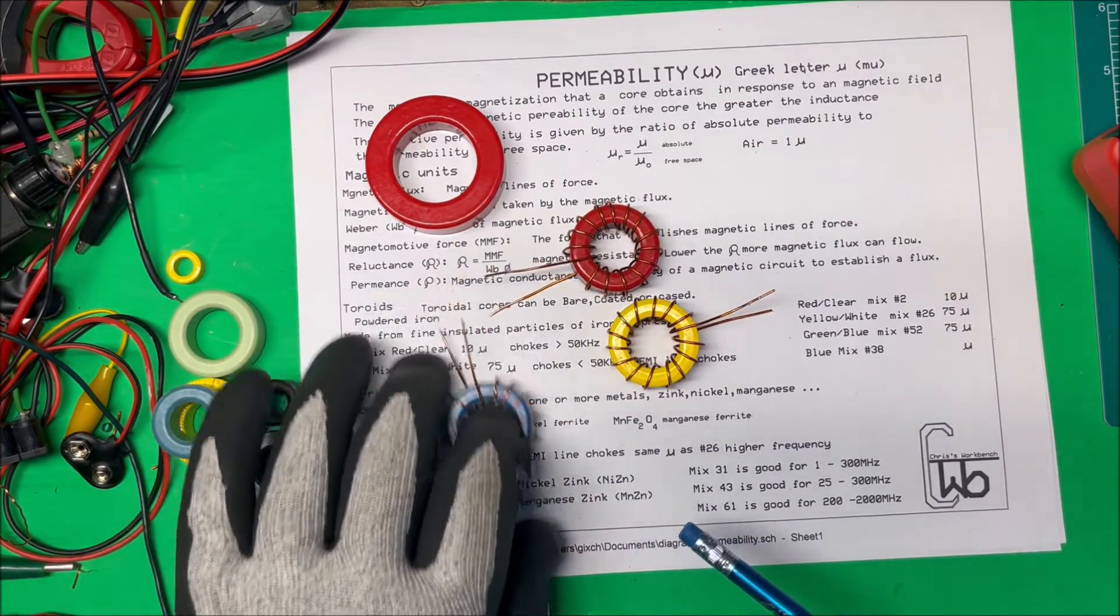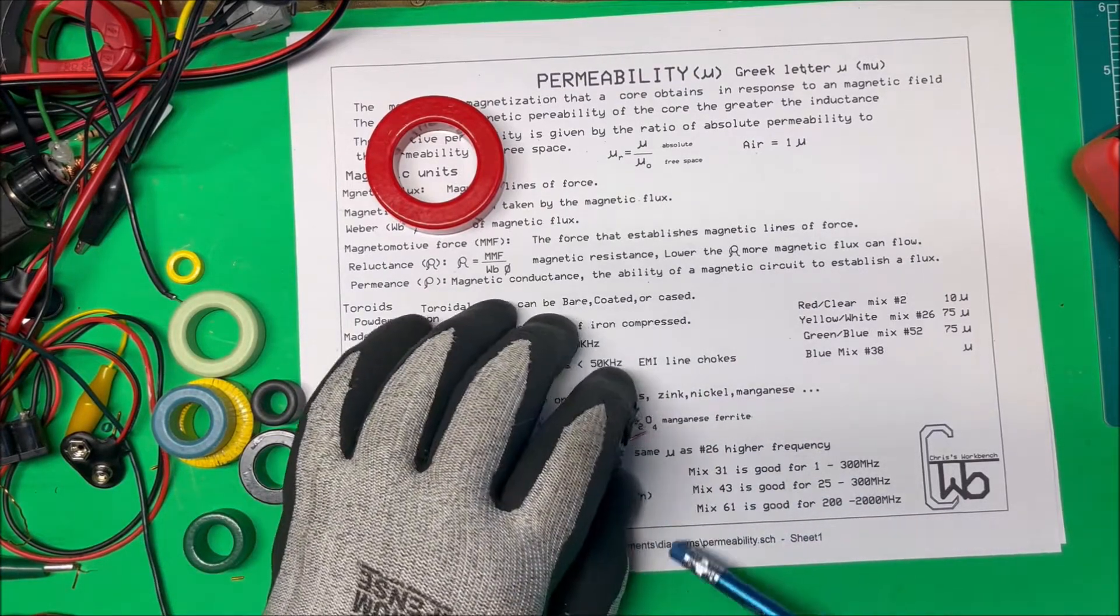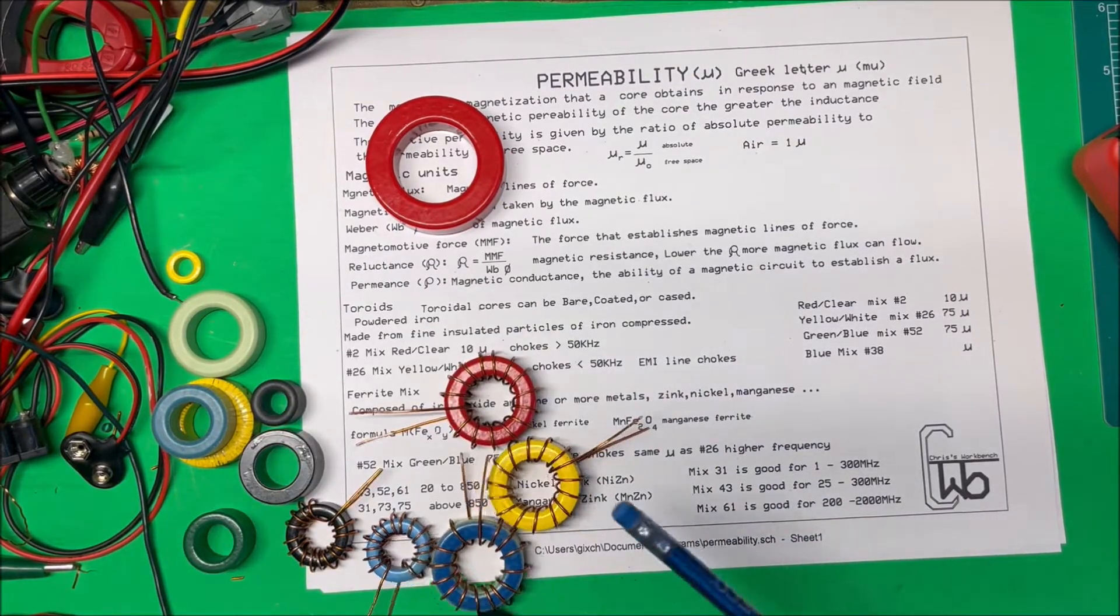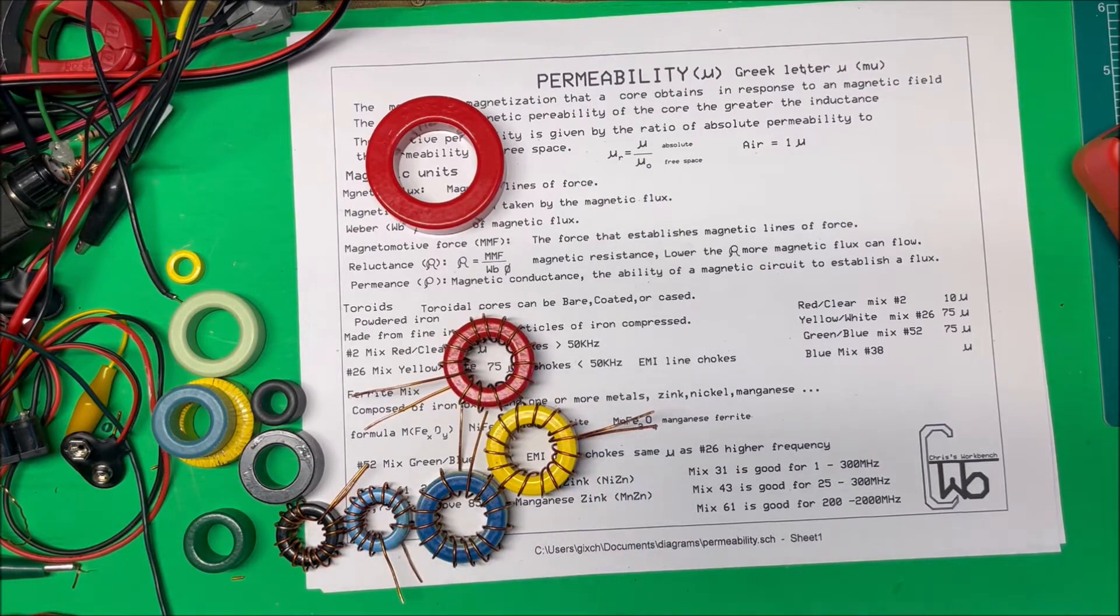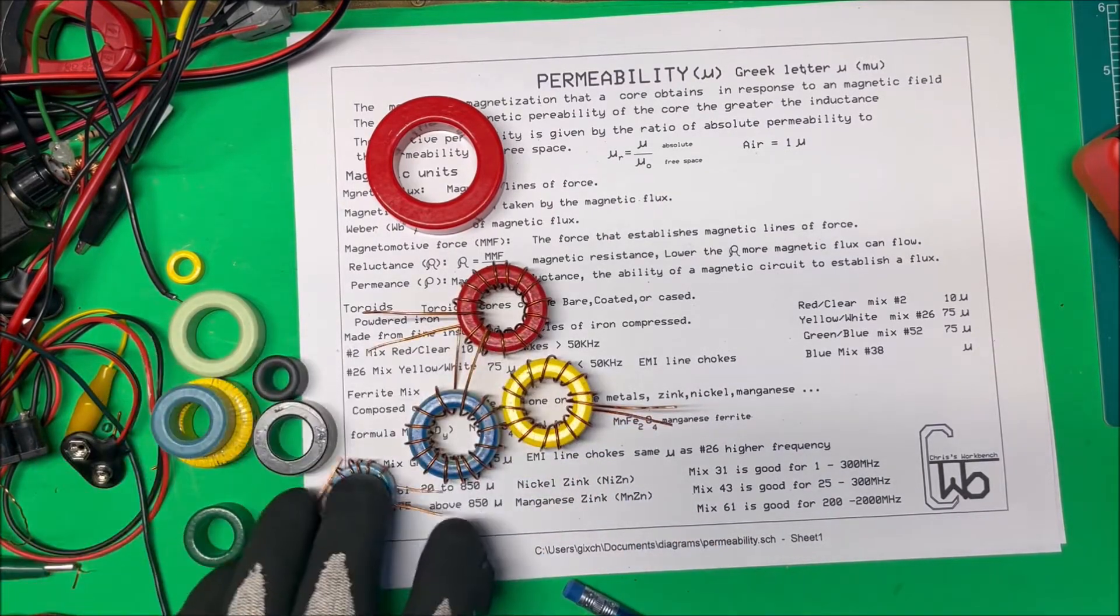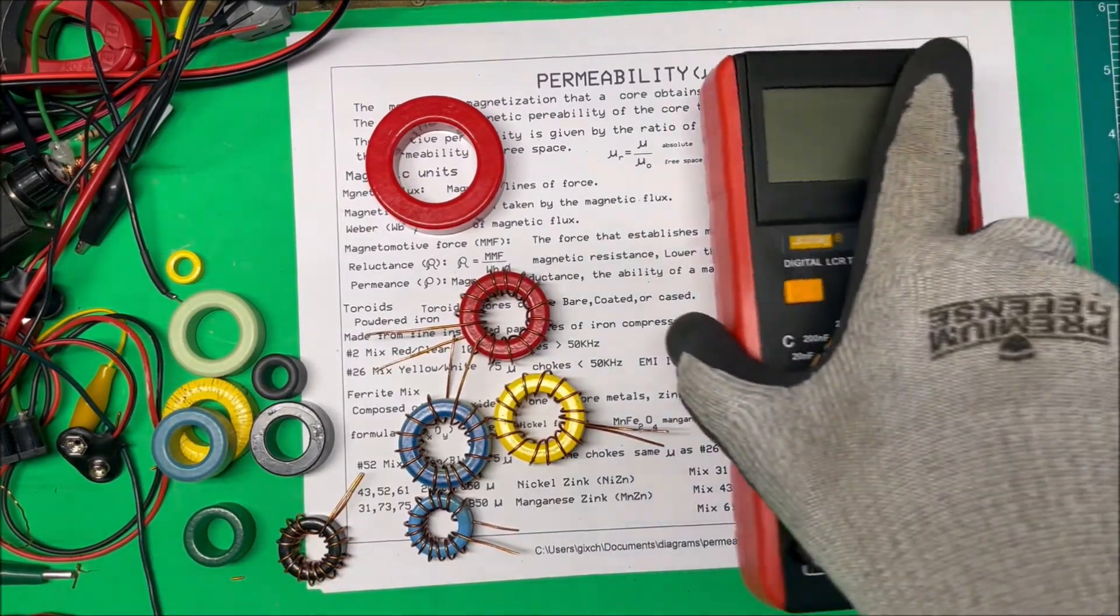So what we're going to do is we're going to measure these and check the inductance of these cores. They all have the same size wire and 15 turns in all of them. Now these two cores are different sizes, so that would make a difference, but these are all the same size.